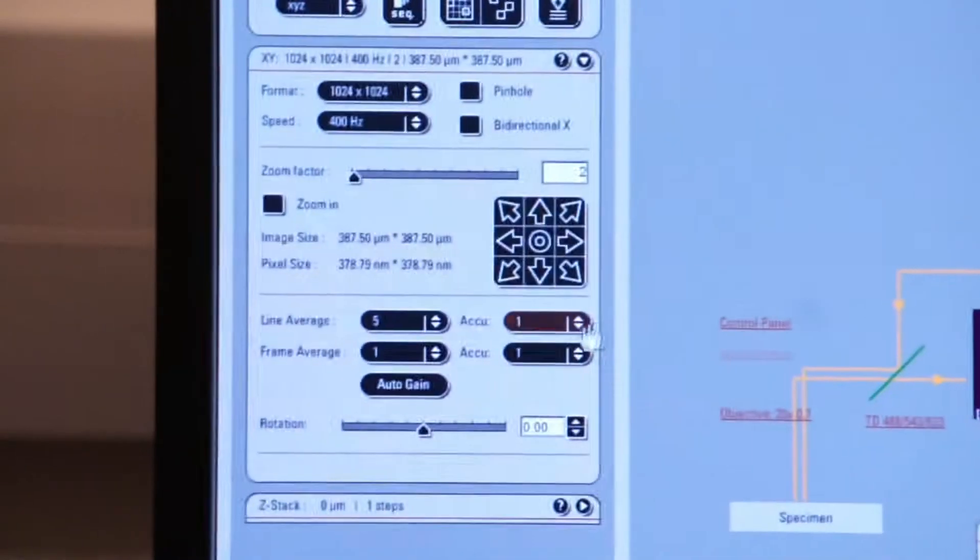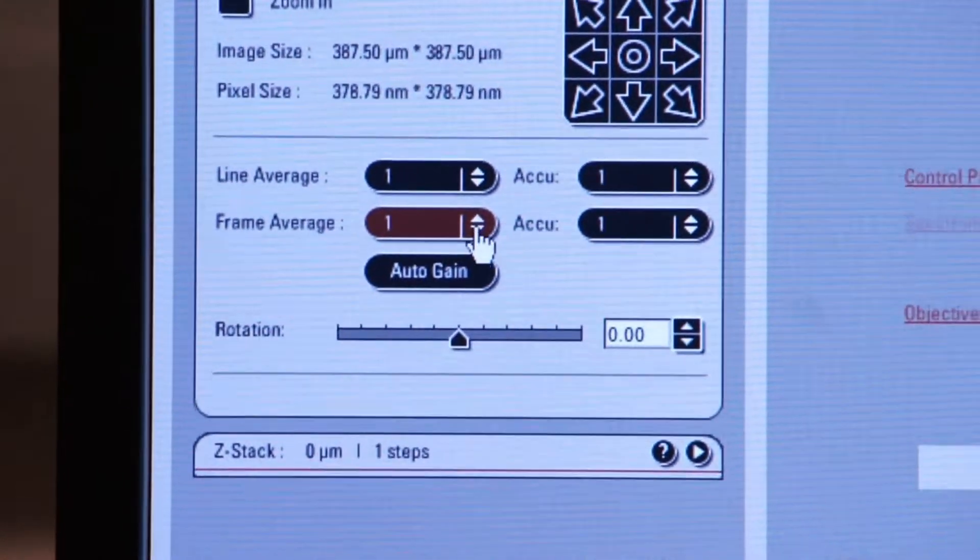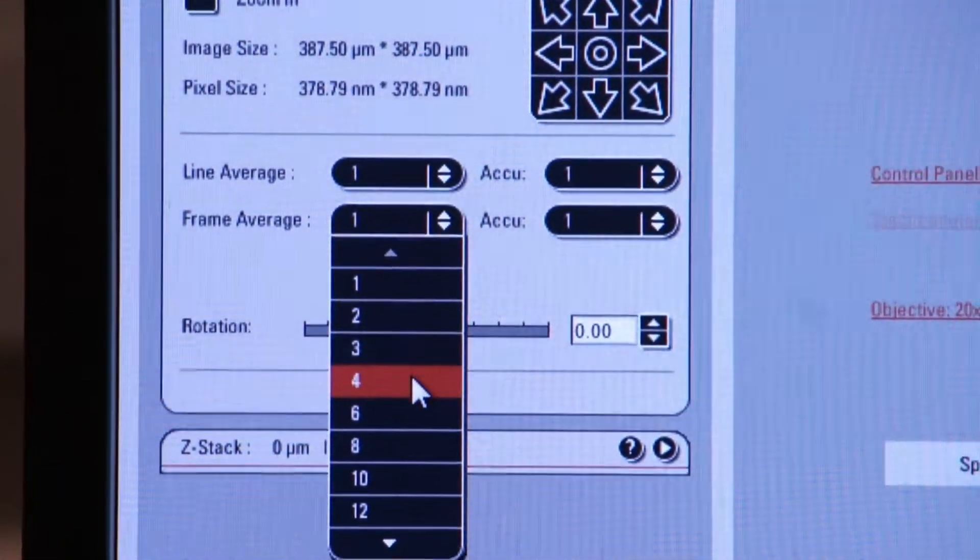Let's try that with frame averaging. So we'll go back over here. We'll turn line averaging back to one and we'll take frame averaging. Let's make it four frames.